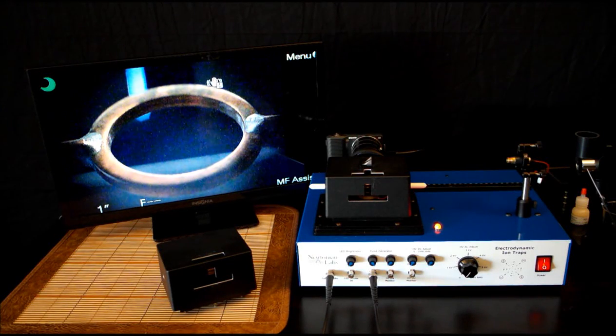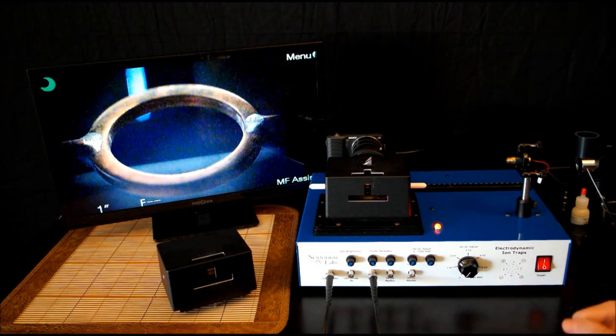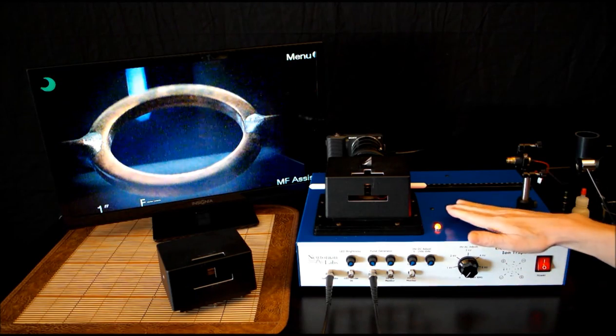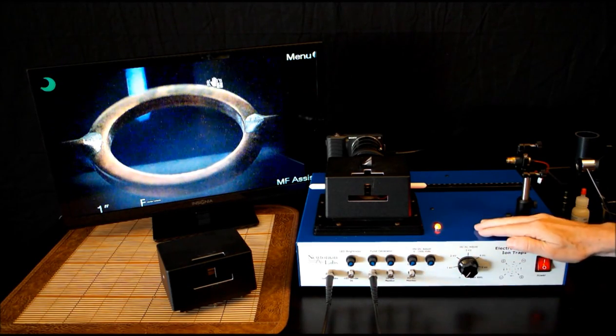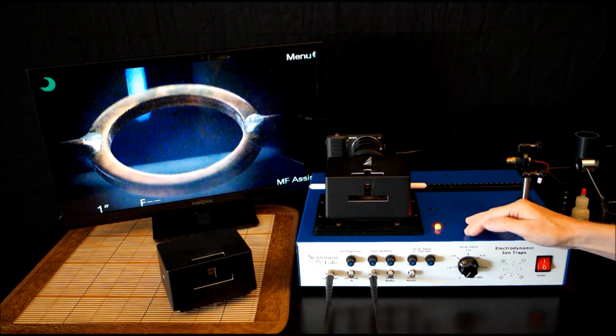What we're looking at here is the Electrodynamic Ion Traps experiment from Newtonian Labs. We're taking a bird's eye view here. We have the main chassis with all the controls for the voltage and the strobe for the laser and various things of that nature.